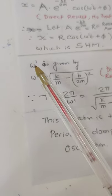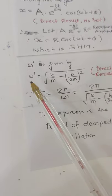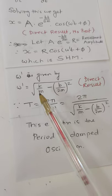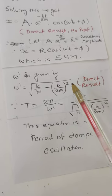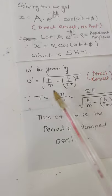Now, ω' is given by—this is also direct—ω' is nothing but √(k/m - (b/2m)²), direct result, no proof. T is what?